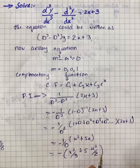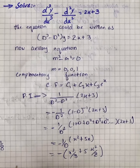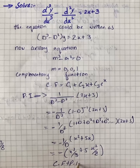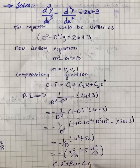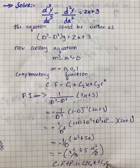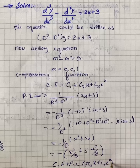So the given differential equation is CF + PI equals c₁ + c₂x + c₃e^x plus...